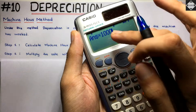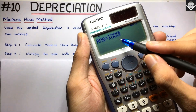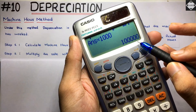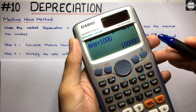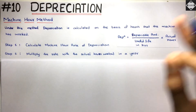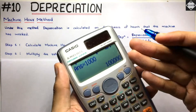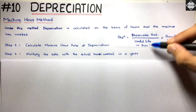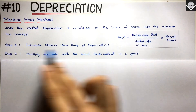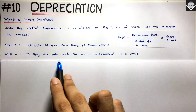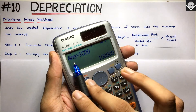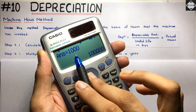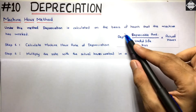Now at the year end, we check for how many actual hours the machine was used in the current year. Say it was used for 1,000 hours. We multiply the Machine Hour Rate of 100 by 1,000 actual hours to get 1 lakh. That 1 lakh is the depreciation for the year. You reduce the cost of machinery by 1 lakh and charge 1 lakh to Profit and Loss as depreciation — that's the simple accounting treatment.